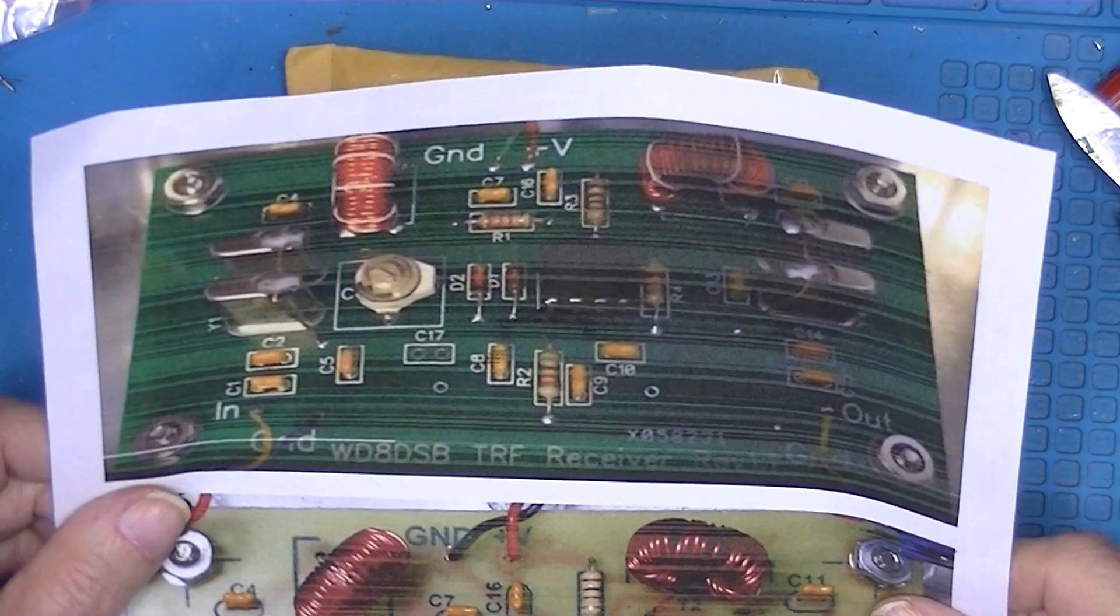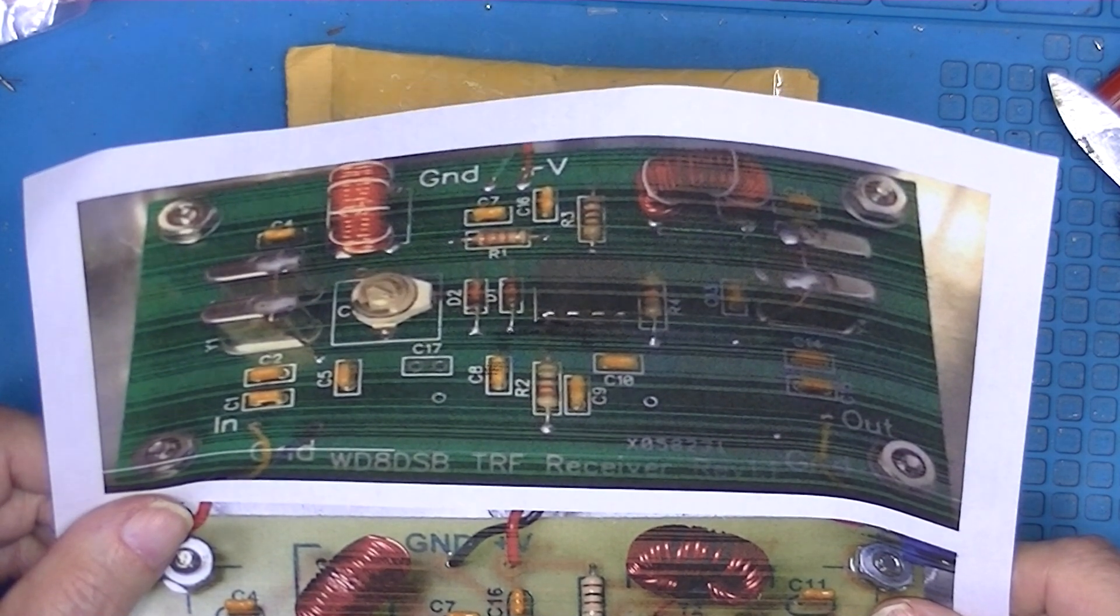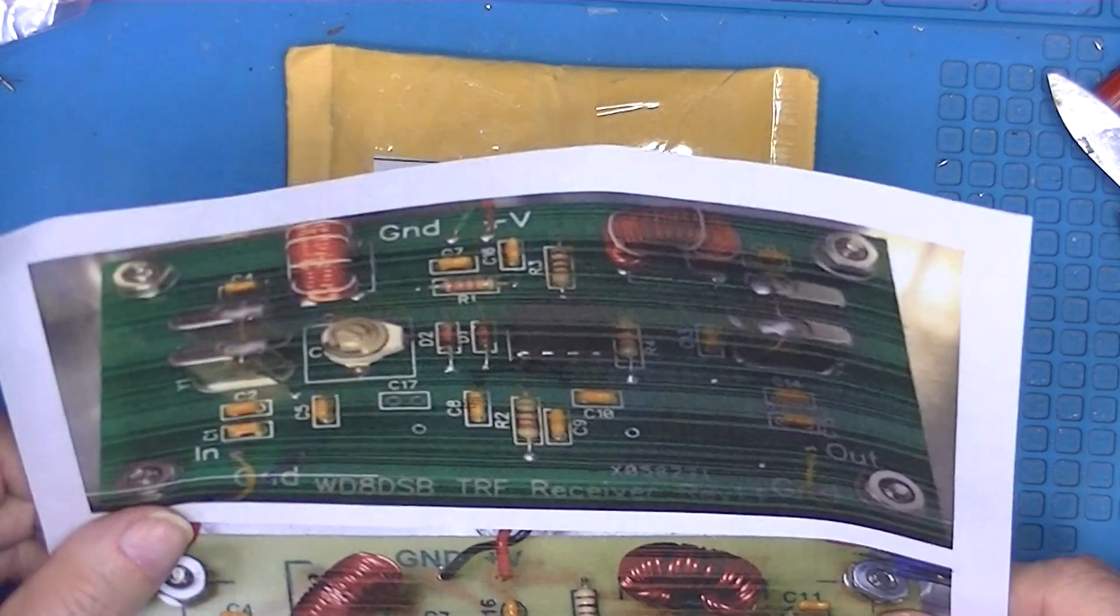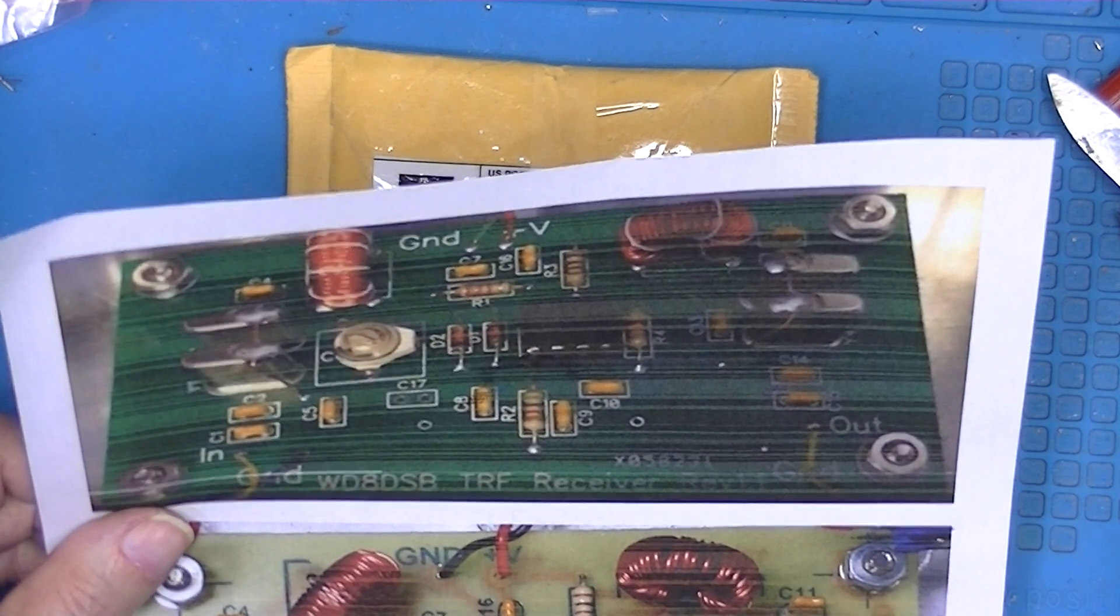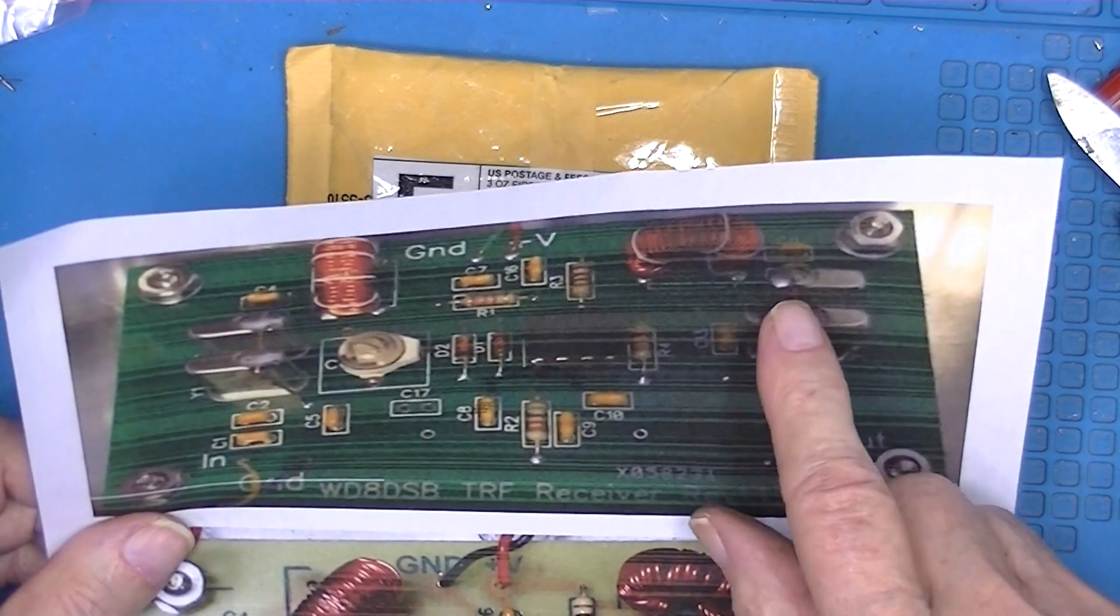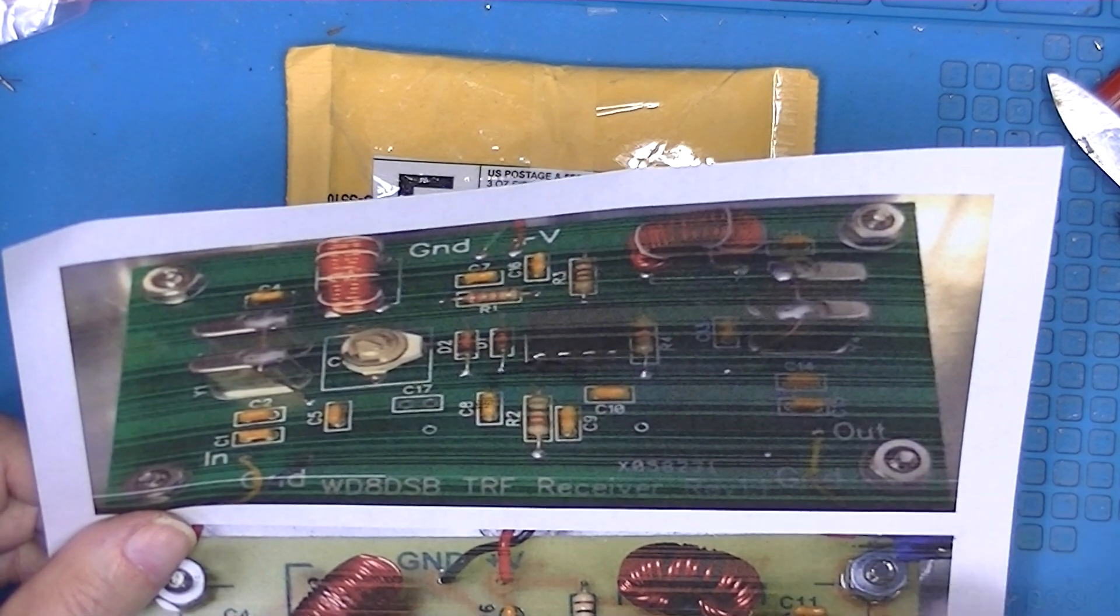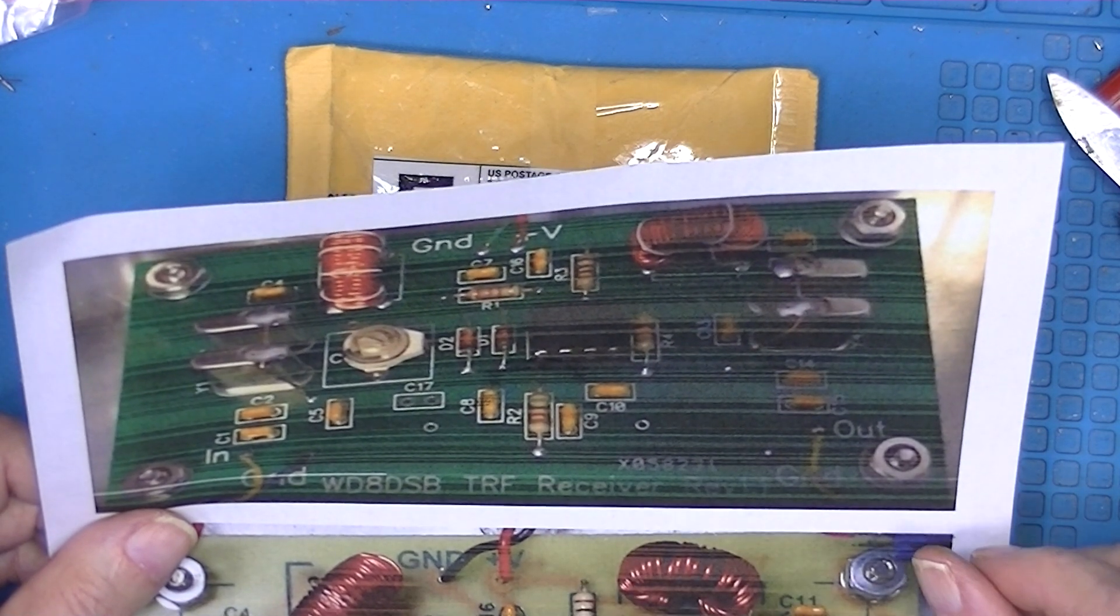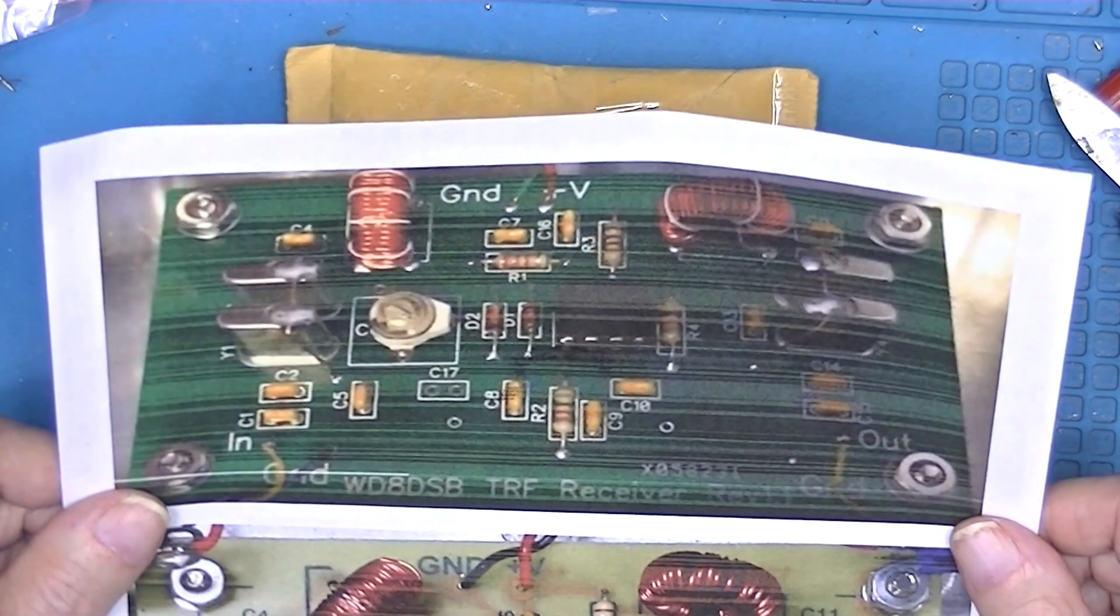I wanted to build a WWV receiver without any heterodyning or anything, just a straight amplifier with the frequency set by some crystal filters with the intention of just getting the WWV signal off the air and amplifying it to something I can use.